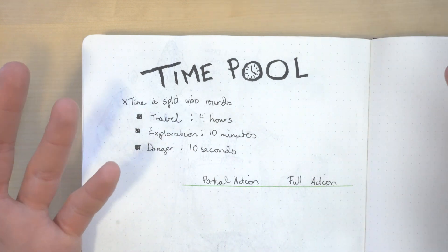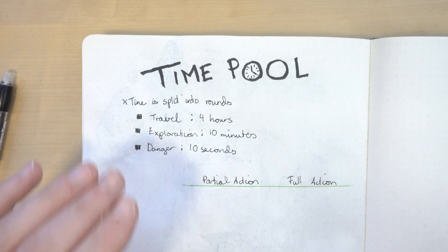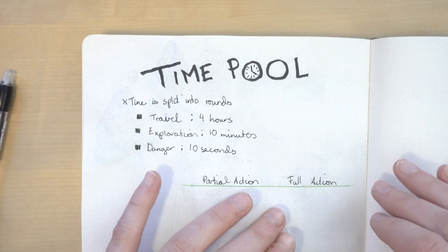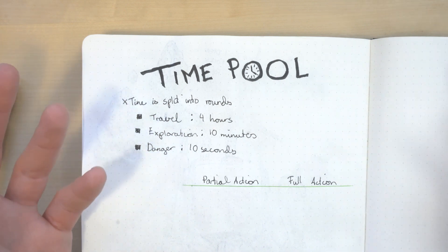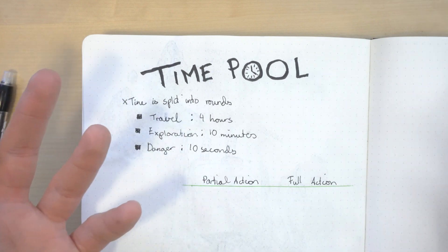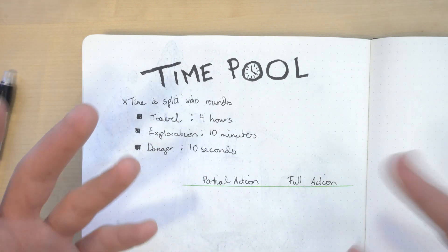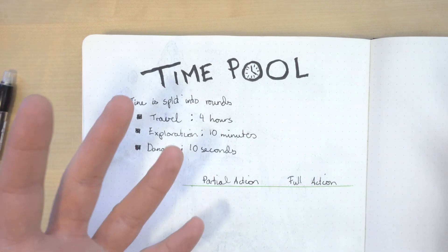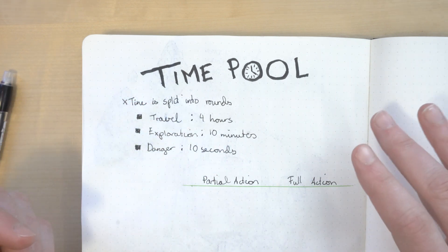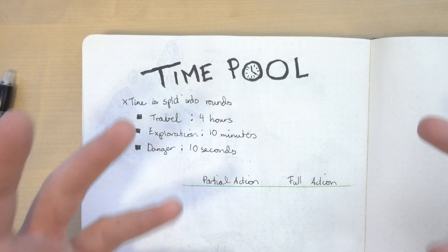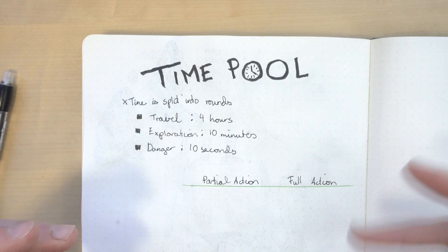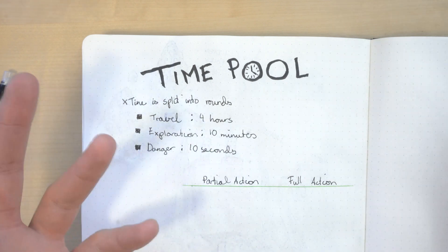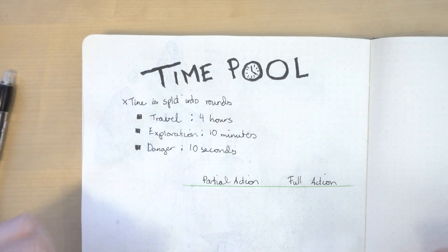Time then gets split into rounds and every character has an action during a round. Actions are split into partial and full actions. You can do one full action and as many partial actions as you want per round, at least a reasonable amount. You resolve all the partial actions first and then the full actions. Full actions are defined as actions that take the whole round to complete, while partial actions don't or can be done in parallel with the full actions like talking.